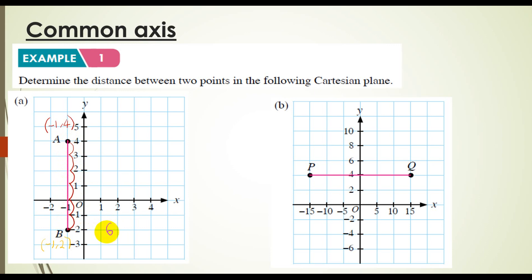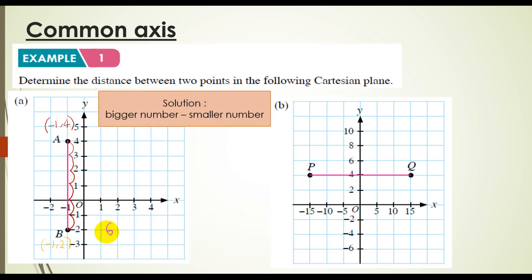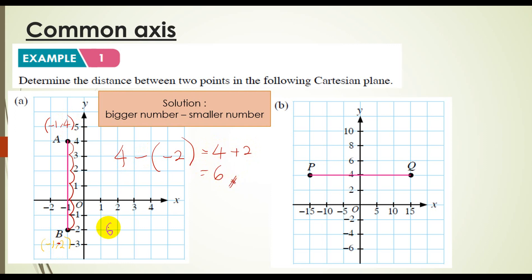Kalau dia tak bagi kotak, macam mana nak kira? Kalau dia tak bagi kotak, awak kena ambil nombor yang besar, tolak dengan nombor yang kecil. Maknanya 4 tolak dengan negative 2 — awak akan dapat 4 tambah 2. So, jarak dia adalah 6. Sama kan — jarak 6. Kalau dia bagi kotak, boleh kira kotak terus. Kalau tak bagi kotak, kena guna formula: ambil nombor besar, tolak dengan nombor kecil.